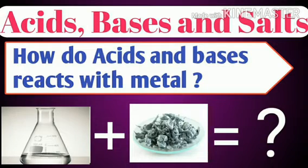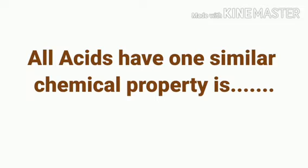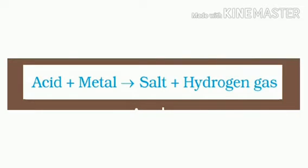All acids have one similar chemical property: when acid reacts with metal, it generates hydrogen gas. That is, acid plus metal gives salt plus hydrogen gas. I hope you are remembering this equation that we learned in the first video.